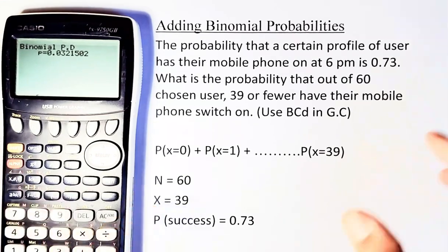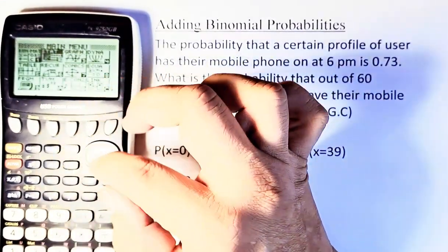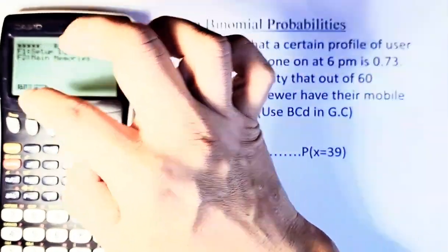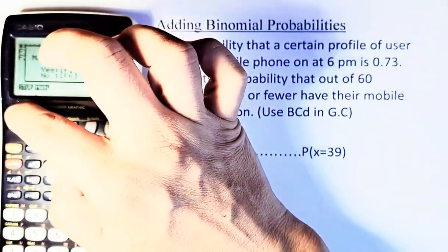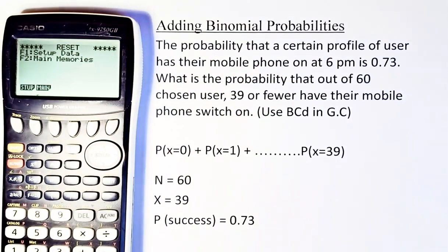Before we start, we are going to reset because I want to show you how to do it. So to reset, just go to menu, go to system, and F5 reset. And then you put F2, clear all memories, and then F1, and then you just wait for a while, and then exit. So we are ready to go now.